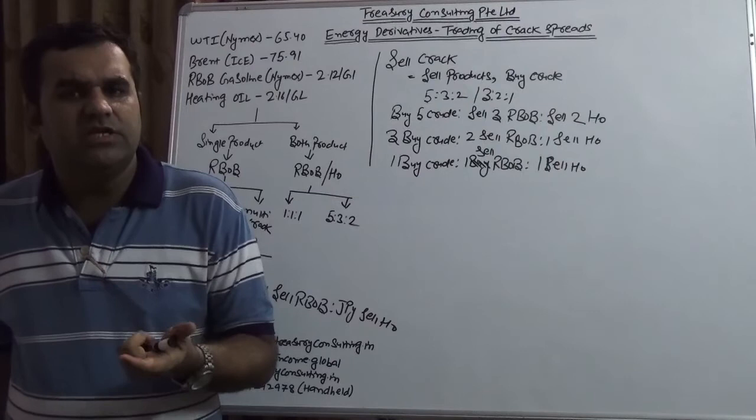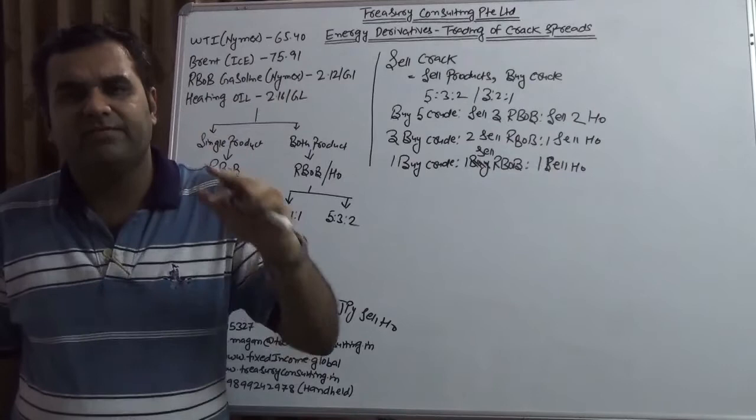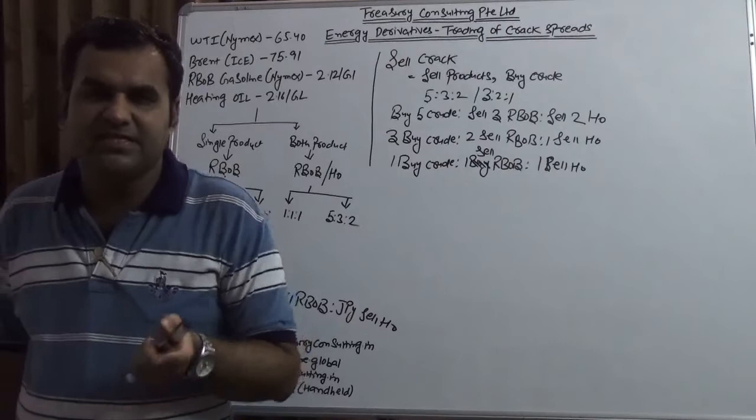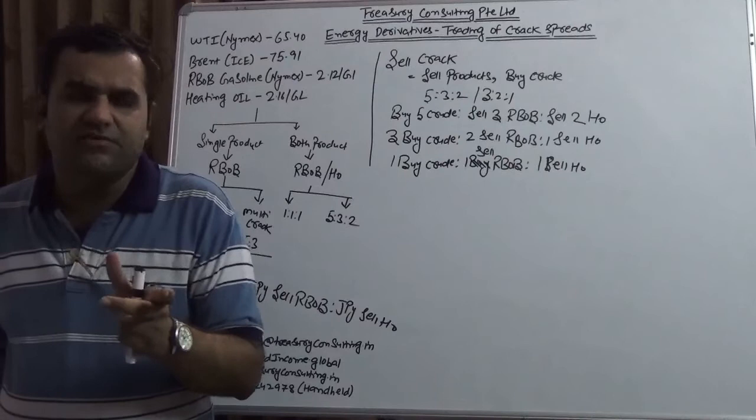That is the only reason that even if the oil, which was approximately $150 at a point of time, turned out to $125, then from $125 turned out to $25, and from $25 to $35, and now it is approximately $76 Brent and approximately $66 WTI — West Texas Intermediate — oil companies are never at a loss because of the way they are taking their positions.